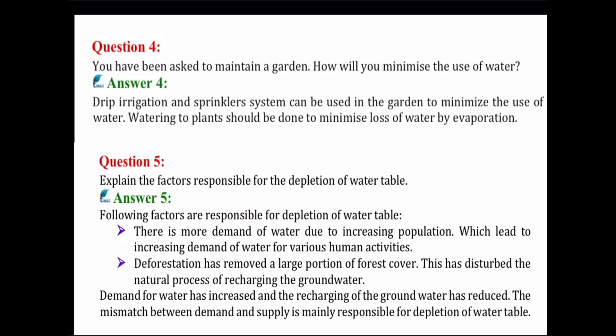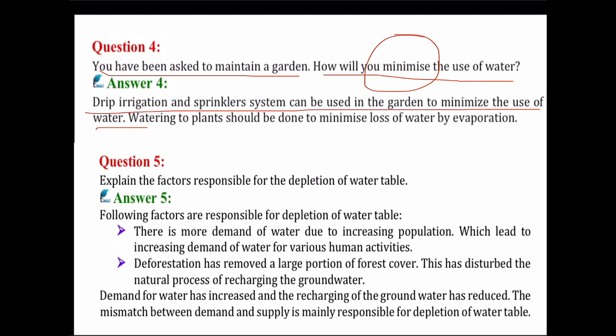Next is question number 4: you have been asked to maintain a garden — how will you minimize the use of water? The answer: drip irrigation and sprinkler system can be used in the garden to minimize the use of water. Watering plants should be done in a way to minimize loss of water by evaporation. We can use the following steps: first is drip irrigation, second is the sprinkler system.